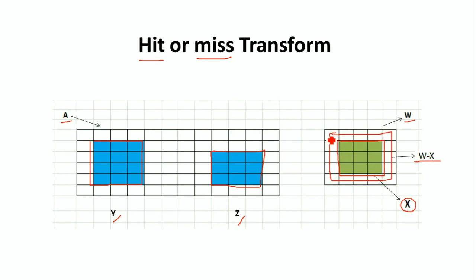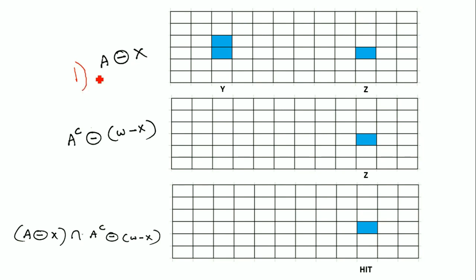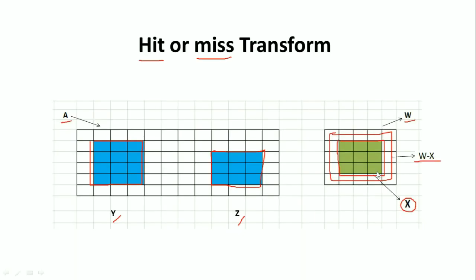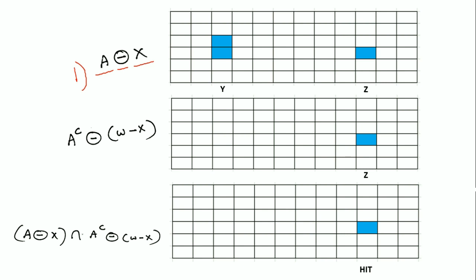Now we apply the Hit or Miss Transform to find the object region of size 3 by 3. The first step is to compute A eroded with X, where A is the image and X is the object we are searching for. When doing this erosion operation, the boundary pixels of object region Y are eliminated. Similarly, for region Z, the boundary pixels are eliminated. So for region Y, only two pixels remain, and for region Z, only one pixel remains.